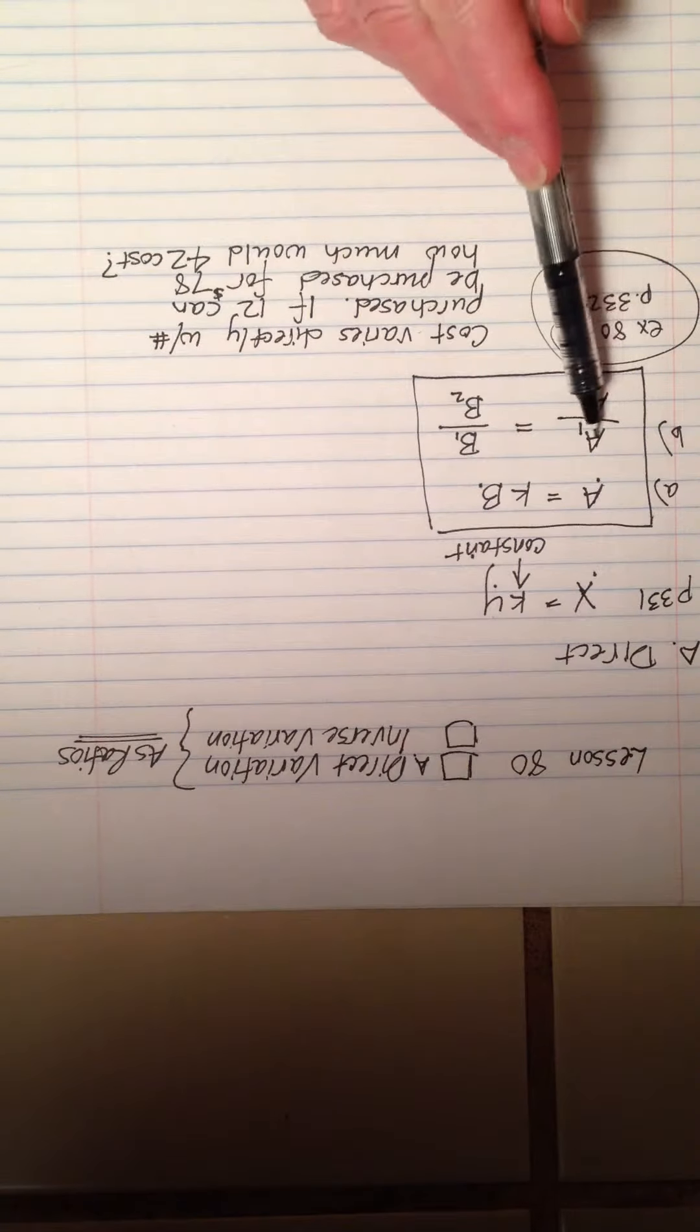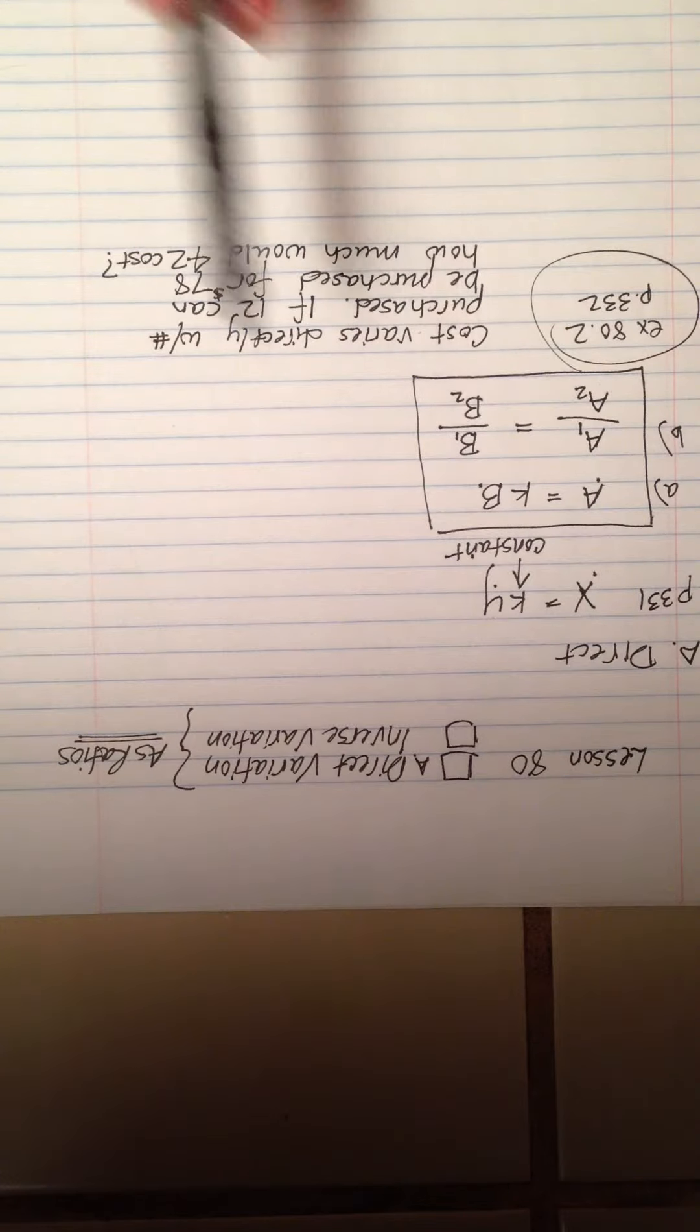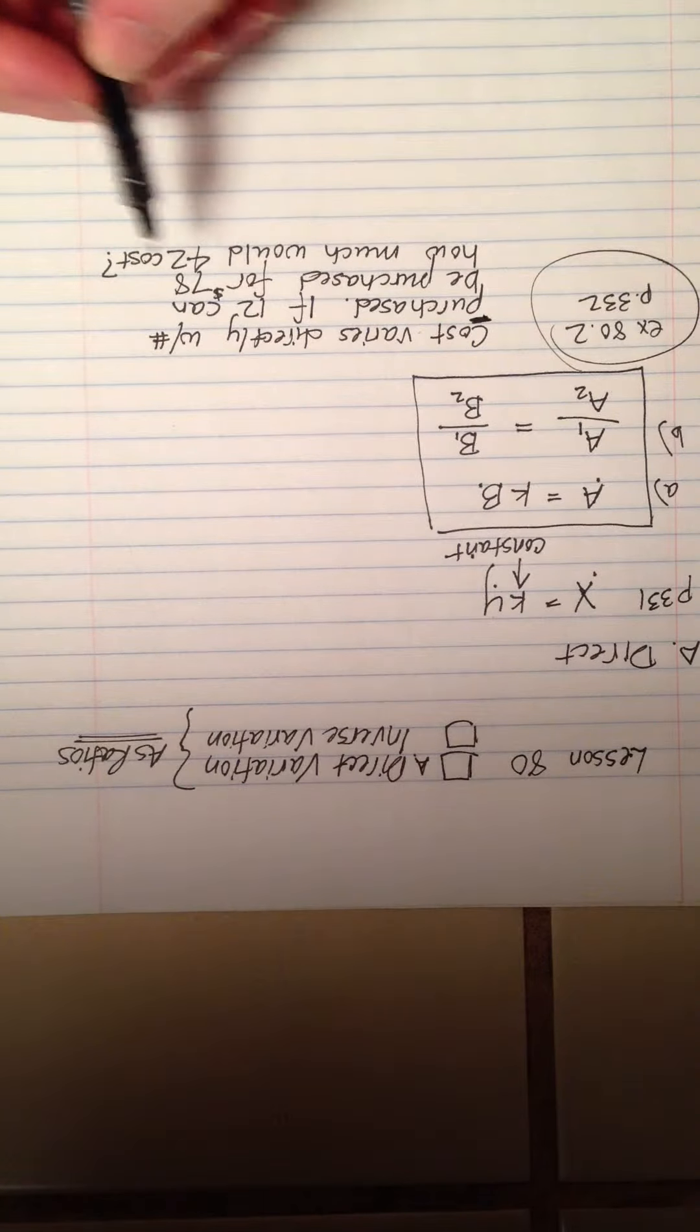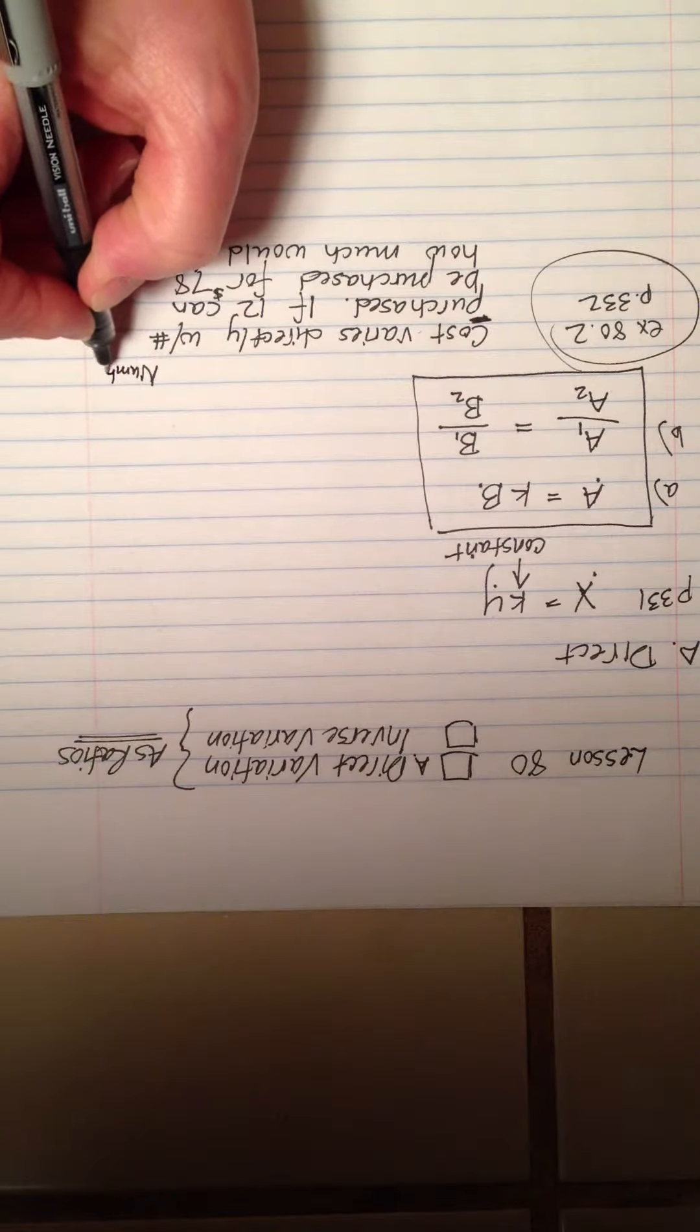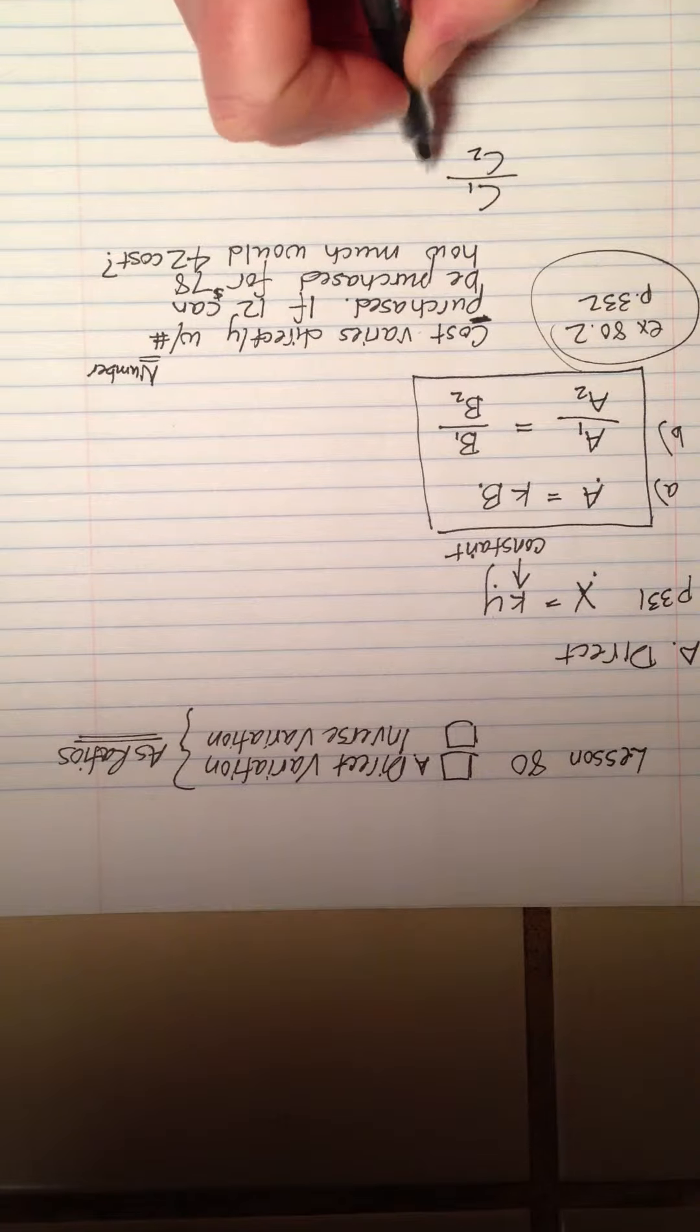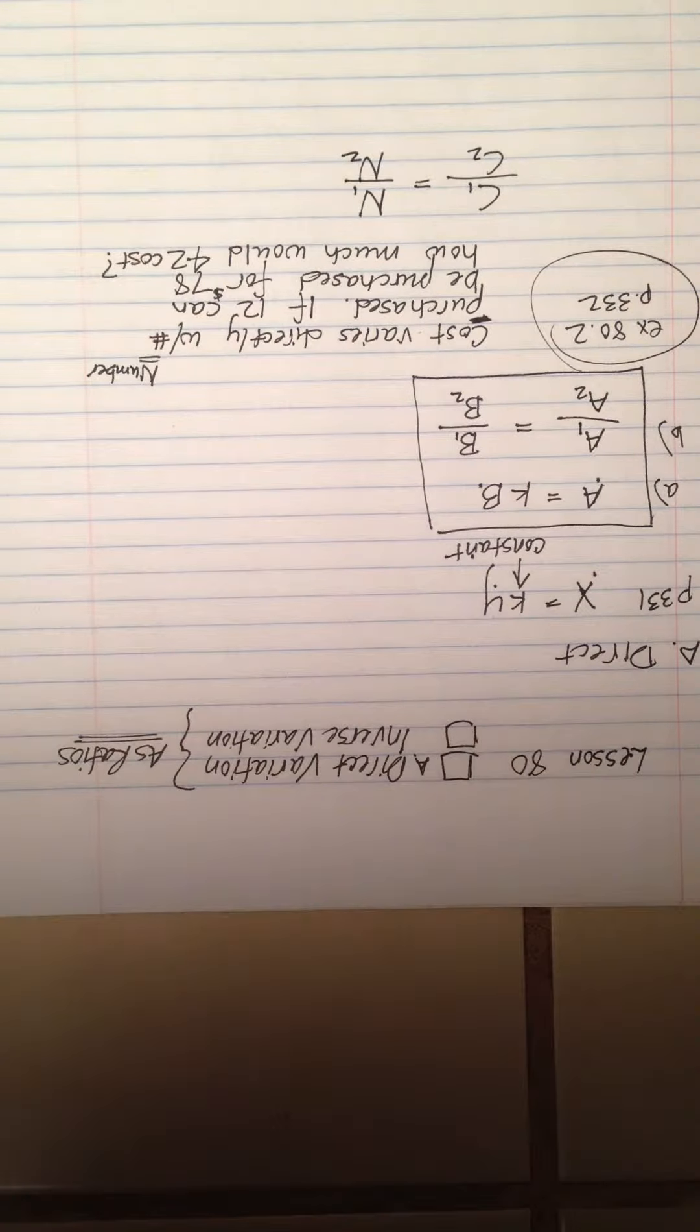One question students have is, okay, is cost supposed to be A or B? Here's the beautiful thing. It doesn't really matter, because as long as you put the first one over the second one, and the other first one over the other second one, it doesn't matter which side you call cost and which side you call number purchased. That's a really nifty thing about this, is it's really hard to screw it up. I'm going to call one variable C for cost, and I'm going to use N for number purchased.